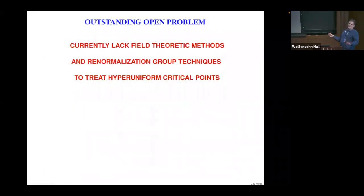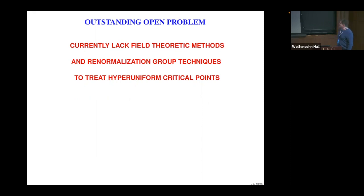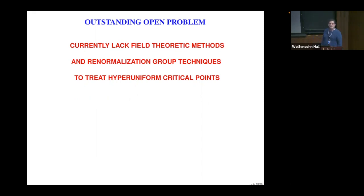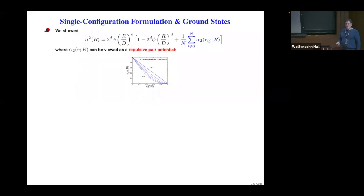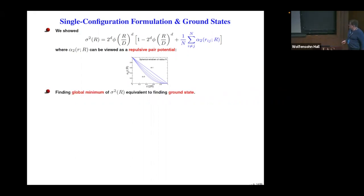Here's an open question I'm directing to this audience of experts: currently we lack field-theoretic methods and renormalization group techniques to treat hyperuniform critical points. Critical exponents are well-defined, but the field-theoretic treatment is absent. I'm covering so many things today that I'm probably not going to be able to get to that, but I'd be very happy to speak with anyone individually at some other time.